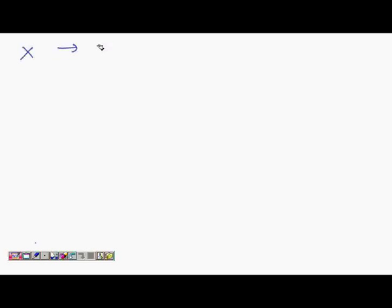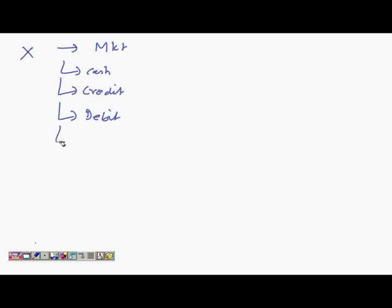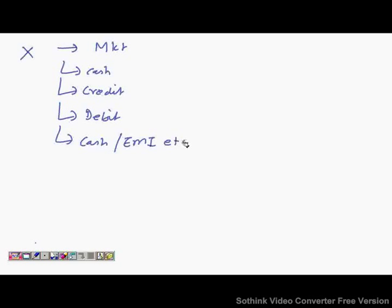For example, if X goes to a market, he can buy by giving cash, or using a credit card, or by paying a partial amount in cash and converting the balance into installments. These are different methods of buying a thing. Now let's go back to the slide.